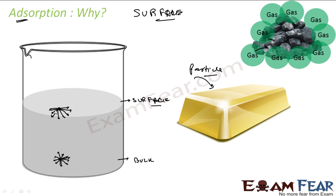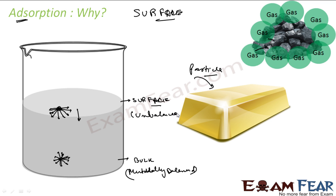In three-dimensional space, the surface particle is like a half-sphere and the bulk particle is a full sphere. In the bulk, all the forces acting between the particles are mutually balanced. But the surface particle is not surrounded by atoms or molecules equally on all sides — there is an unbalanced force of attraction. And this unbalanced force is responsible for adsorption.